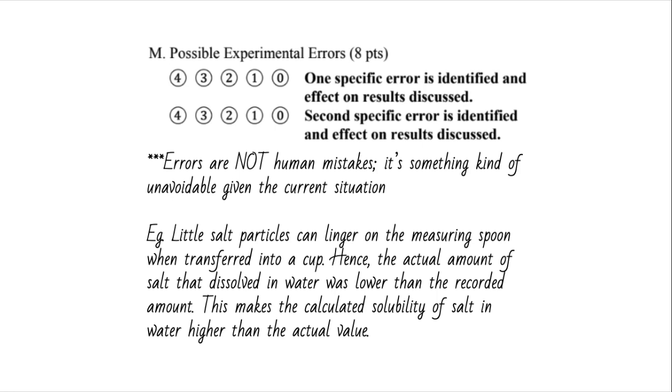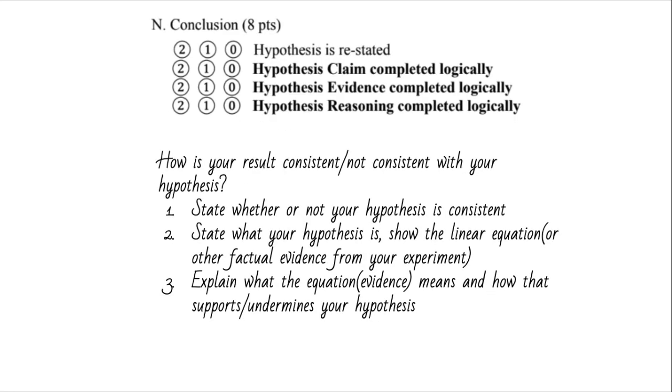This year, big change, is they split up the previous conclusion into two parts. The conclusion listed here is going to be a lot easier. You are just going to talk about whether or not your hypothesis is consistent with your result. Again, it's using CER. It helps you organize your stuff. First of all, say yes, my hypothesis is consistent with my result, or no, it is not. Then you need to explain your reasoning.